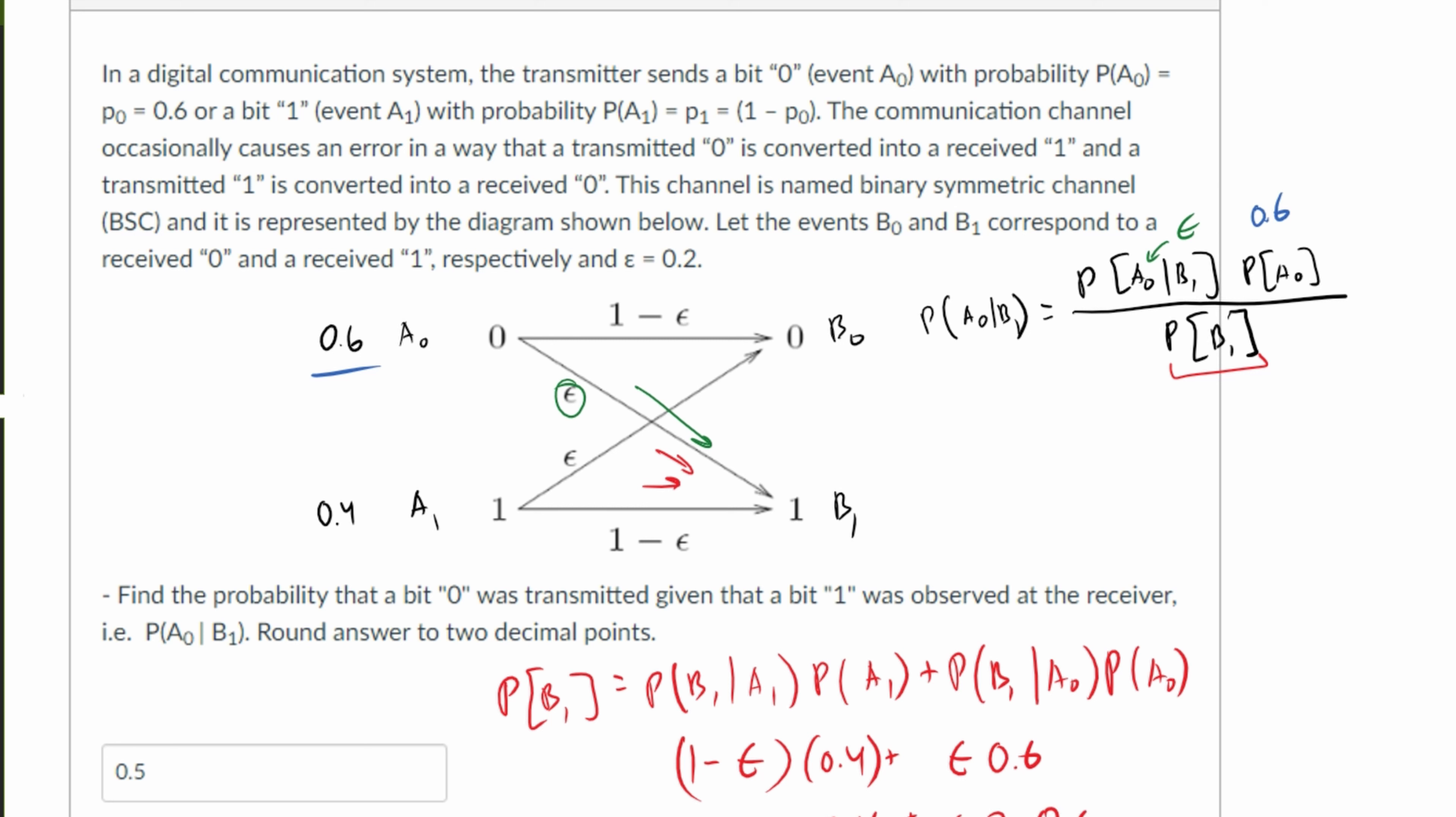That's essentially going to leave us with 0.8 times 0.4 plus 0.2 times 0.6 for this problem. Remember, your numbers might be different, so check that. That's going to give us about 0.44. So that's what we're going to plug in here.